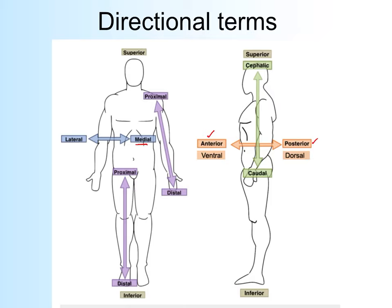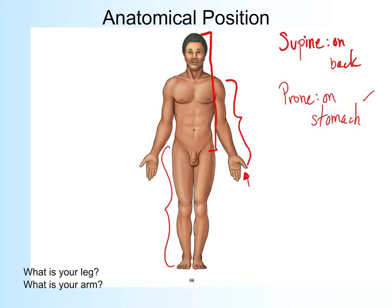Medial and lateral: medial means closer to the midline — the imaginary line down the center of your axial region. Anything further from the midline is lateral. In anatomical position, the palms face forward, feet point forward, and you stand straight. The thumbs are the most lateral digit because they're furthest from the midline. Digit five, the pinky, is your most medial digit because it's closest to the midline.